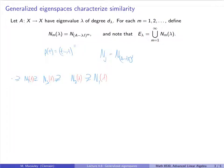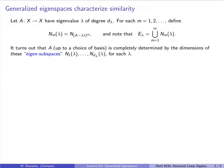We will denote E-lambda to be the generalized eigenspace corresponding to lambda — that's just the union of all these N_M(lambda). Assuming X is finite-dimensional, we only need to go up to degree d-lambda. I'll also refer to these N_J's as eigensubspaces, since they are subspaces of the generalized eigenspace E-lambda. It turns out A, up to a choice of basis — equivalently, the similarity class of A — is completely determined by the dimensions of these eigensubspaces N1 up to N_d for each lambda.